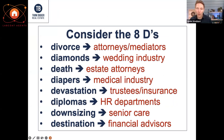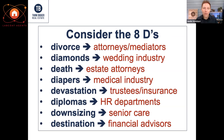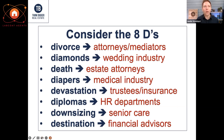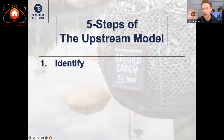How does this apply to you as a real estate agent? Those eight D's map directly: divorce — attorneys and mediators; diamonds — the wedding industry; death — estate attorneys; diapers — the medical industry and birthing classes; devastation — trustees and insurance companies; diplomas — HR departments; downsizing — senior care; destination — financial advisors. All of these professions end up being what I call upstream partners. When you learn how to professionally network into these people, you create a very unique relationship with access to a lot of clients early.